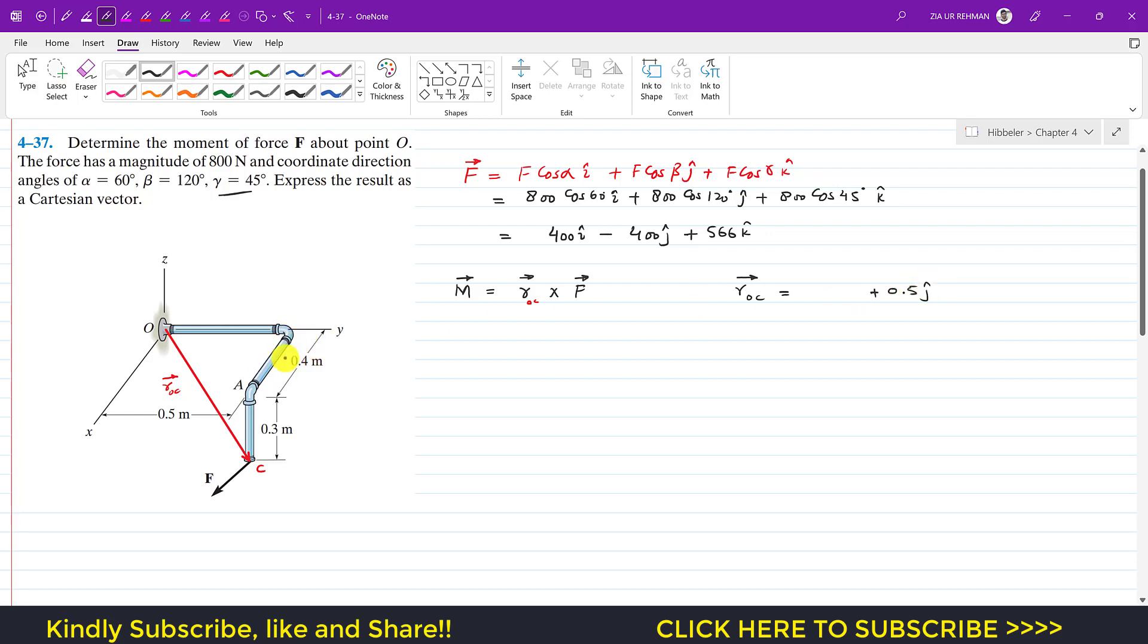And then once we reach here, we need to travel 0.4 meters in the positive x, that is in the positive i. So 0.4 in the positive i. And then we need to travel 0.3 meters in the negative z, that is in the negative k. So that is minus 0.3k.